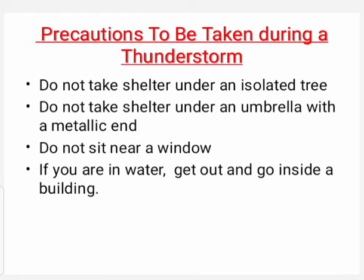Precautions during a thunderstorm: Do not take shelter under an isolated tree. Do not take shelter under an umbrella with a metallic end, because metals are good conductors of electricity. Do not sit near a window, because window bars are made of iron. If you are in water, get out and go inside a building.